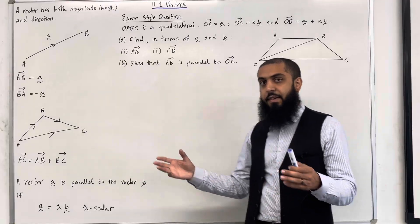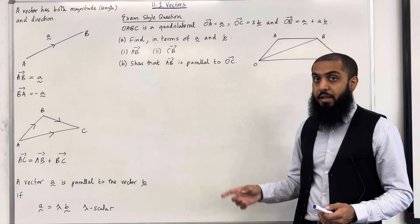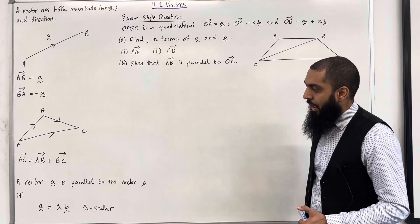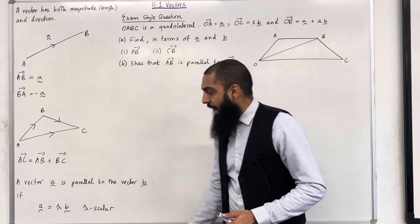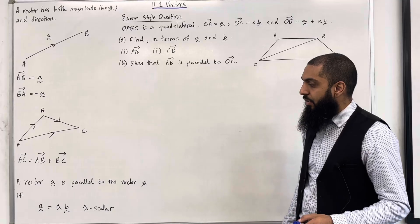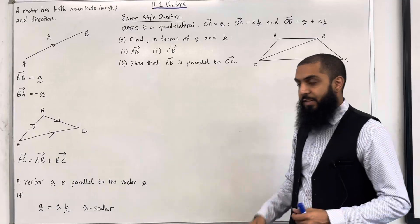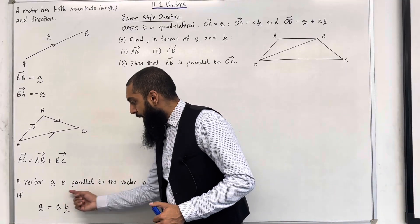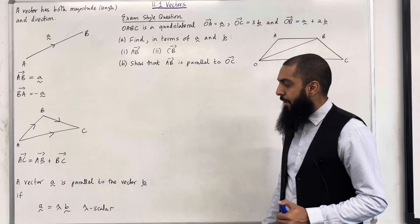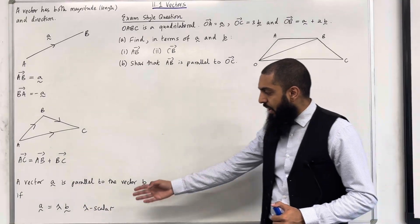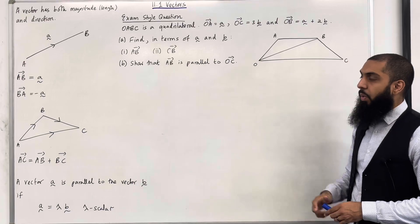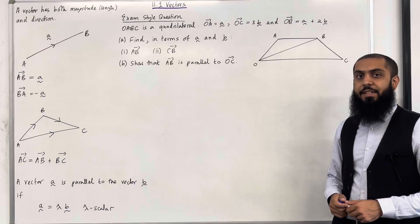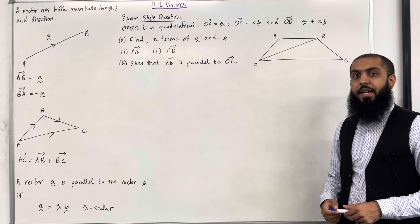What is the definition of parallel vectors? This is very important. A vector A squiggle is parallel to the vector B squiggle if A squiggle equals lambda lots of B squiggle. In other words, the vector A is a scalar multiple of the vector B. So lambda is a scalar, it's a fixed number. These are the key facts of 11.1 vectors. I'll be implementing these key facts within this particular exam style question.